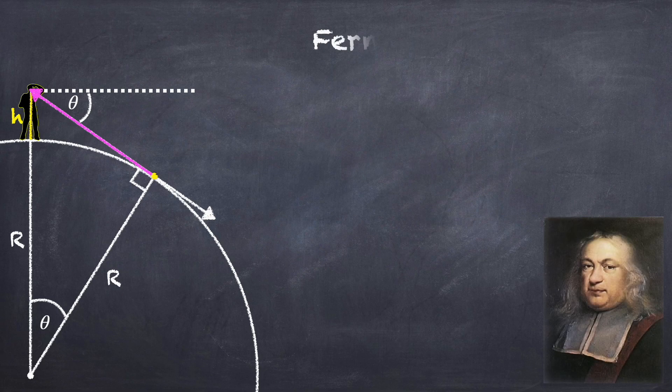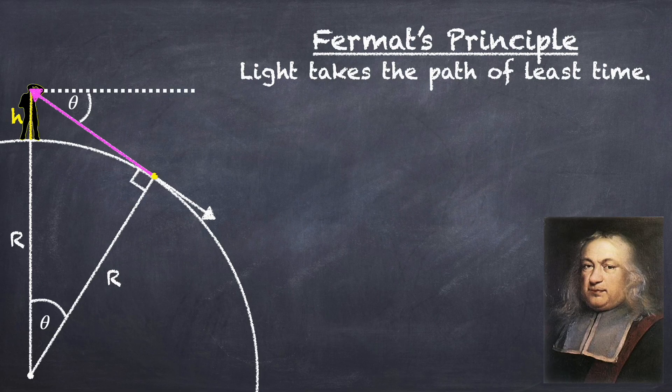Light travels according to Fermat's principle, which says that it will take the path of least time. A straight line is the path of least distance, and the two may not be the same.